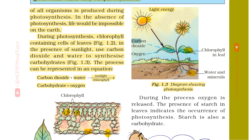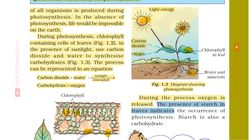The plant absorbs carbon dioxide and releases oxygen during photosynthesis. During the process, oxygen is released. The presence of starch in leaves indicates the occurrence of photosynthesis. Starch is also a carbohydrate.